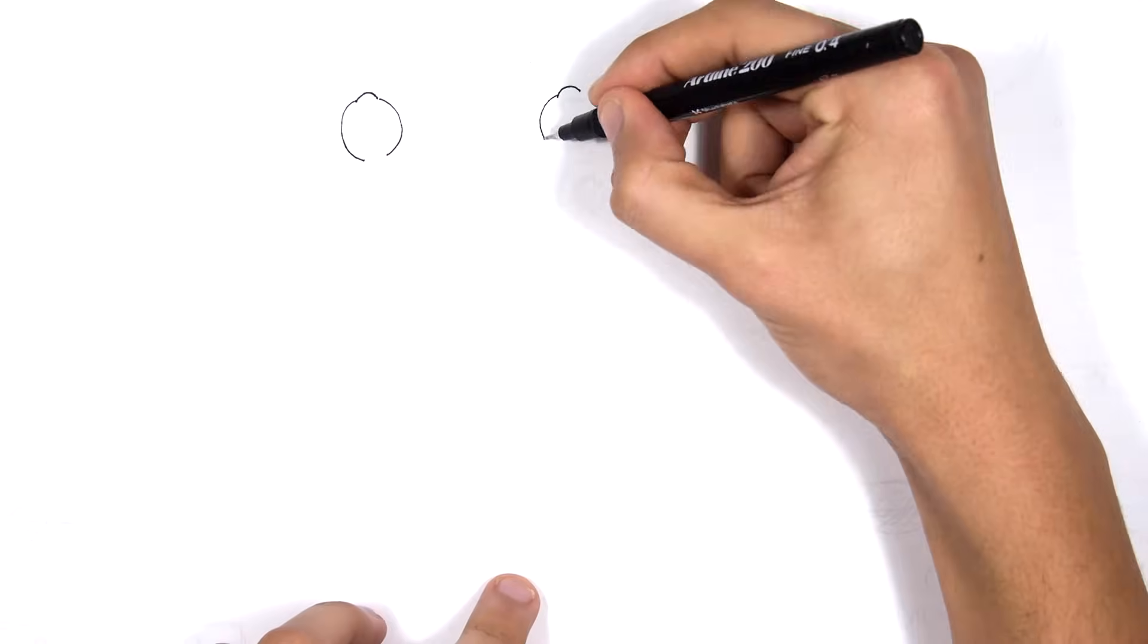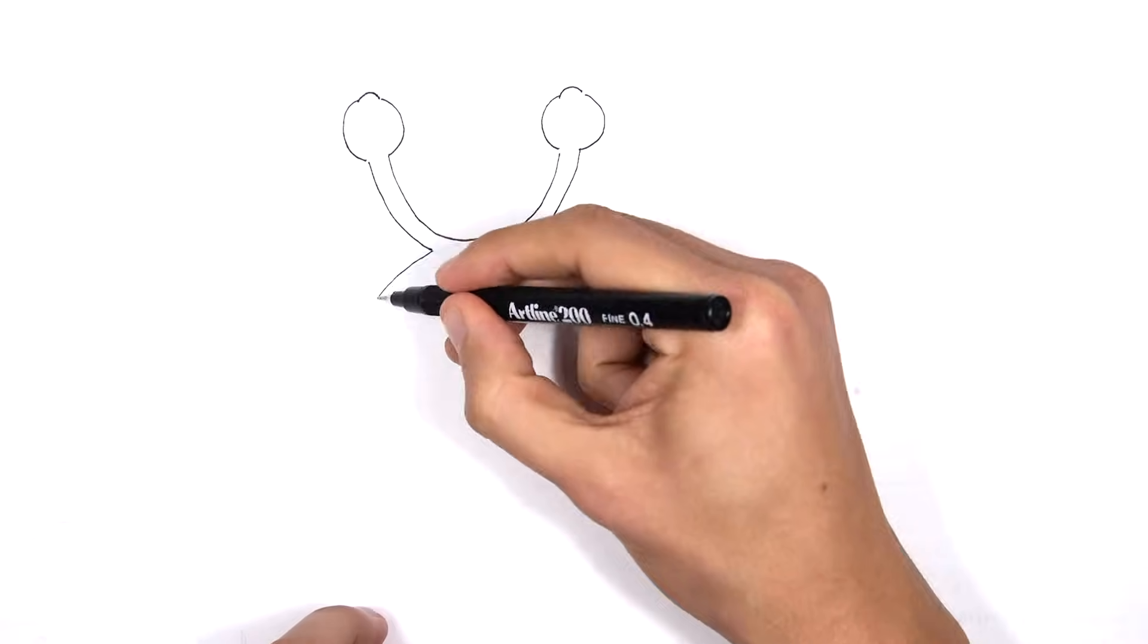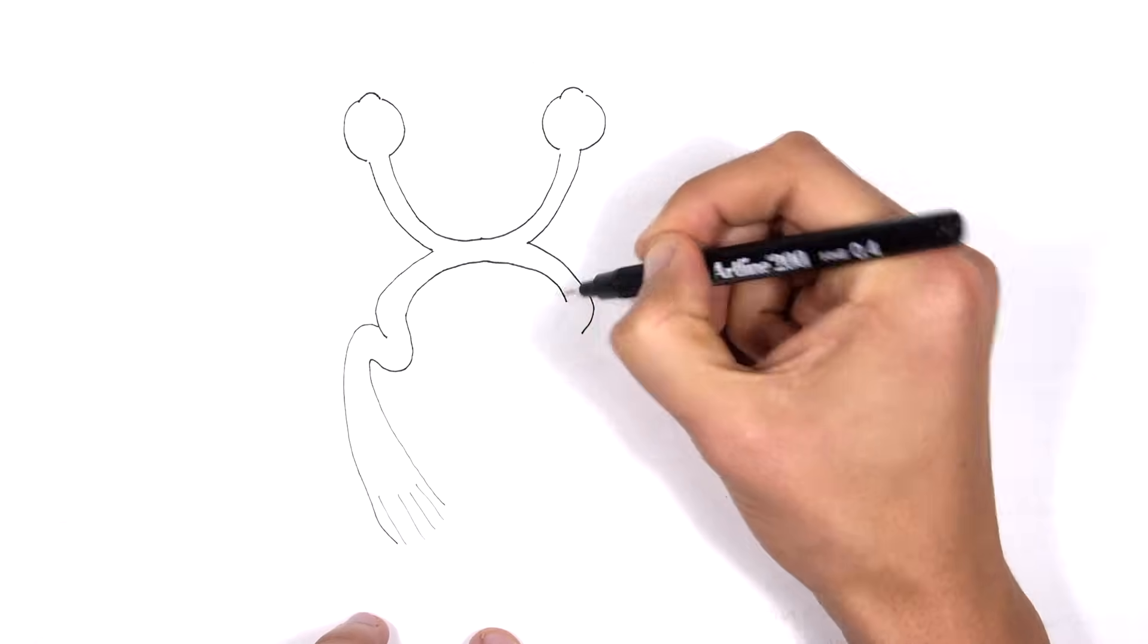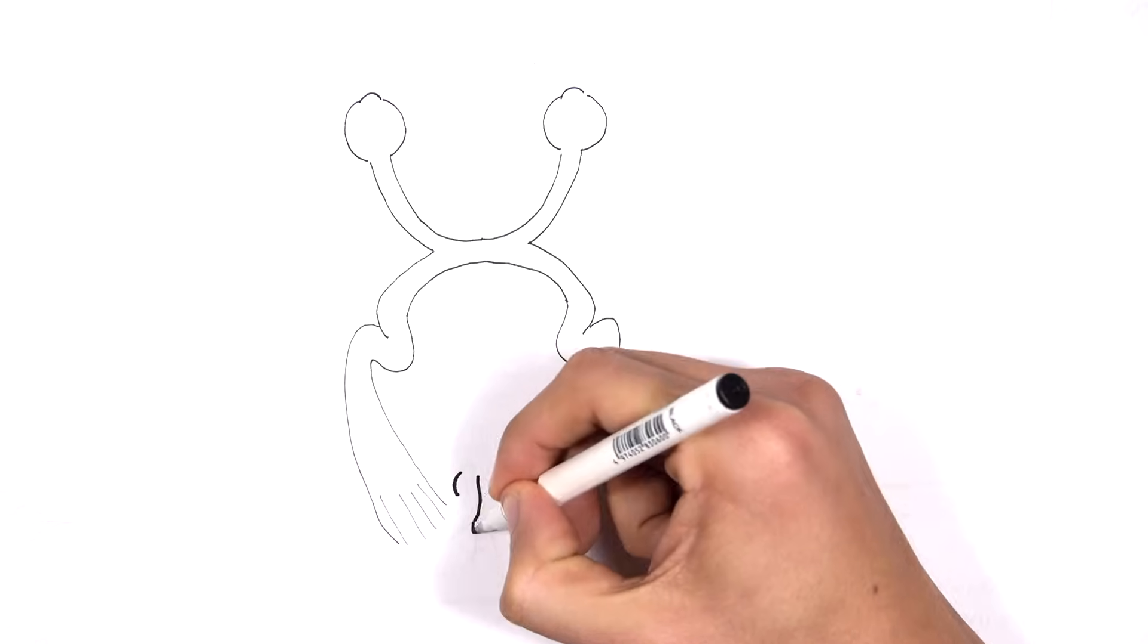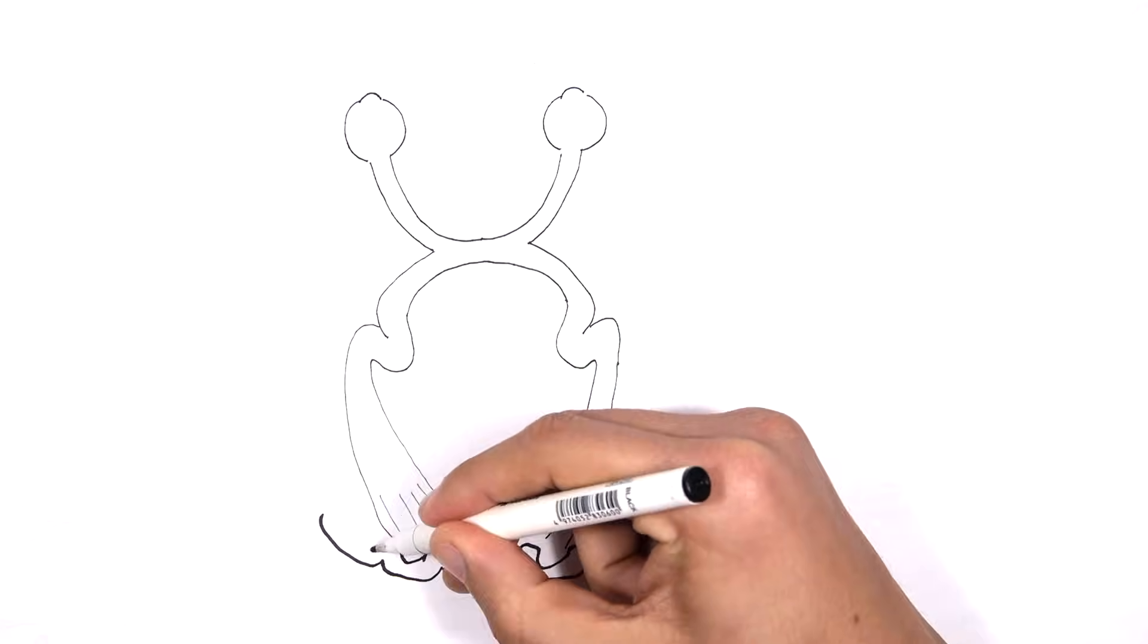Hello, in this video we're going to look at the pathway of vision and we also will look at what happens when there are lesions that occur along this pathway and how it affects our vision.